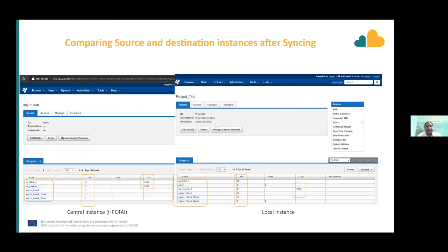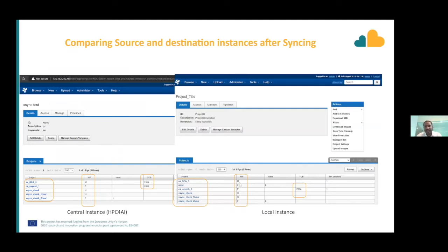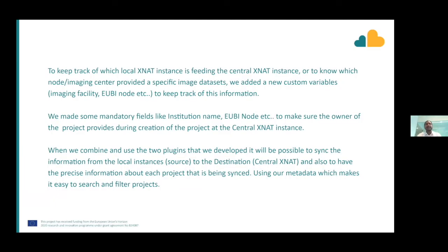Here is a screenshot comparing the source and destination — the local instance on the right and the destination on the left. We have synced five out of six subjects, and you can see all the metadata information is getting synced across the local and the central. To keep track of which local instance is feeding the central XNAT, or which node or imaging center provides specific datasets, we added new custom variables like imaging facility and EUBI node.